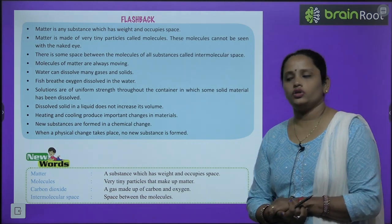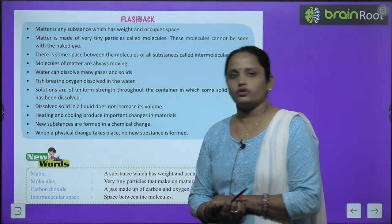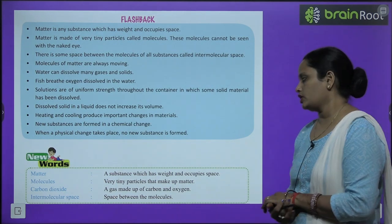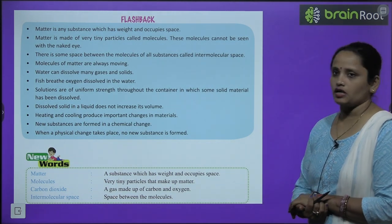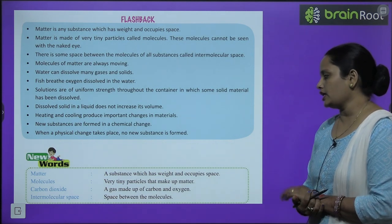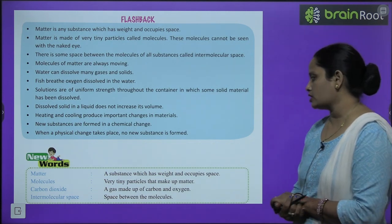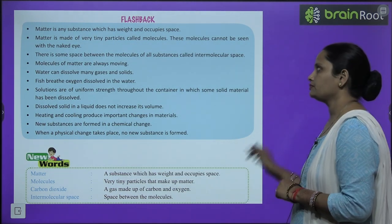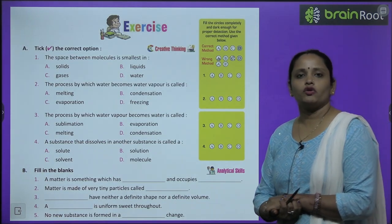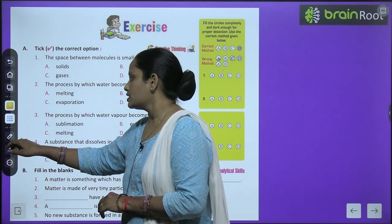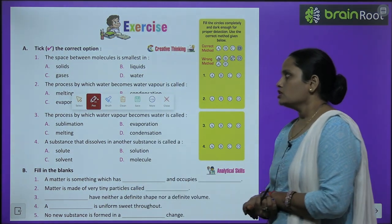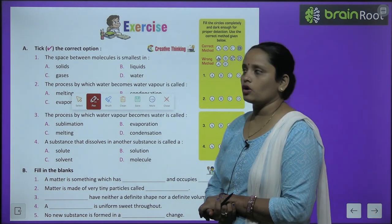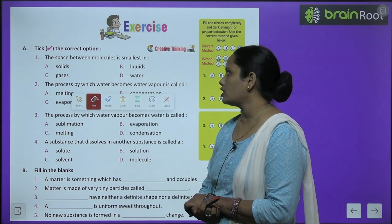Now let's move on to new words. Matter: a substance which has weight and occupies space. Molecule: very tiny particles that make up matter. Carbon dioxide: a gas made up of carbon and oxygen. Intermolecular space: the space between the molecules. Now let's move on to the book exercise. The space between molecules is the smallest in solids.